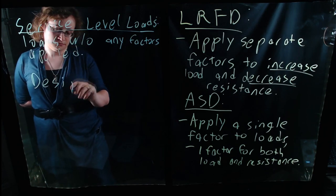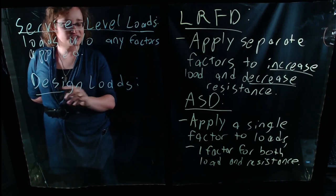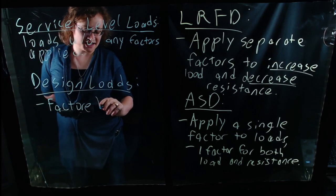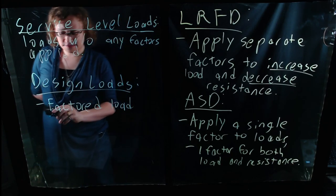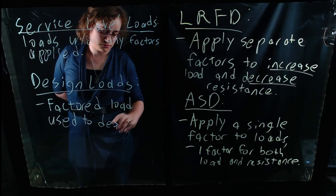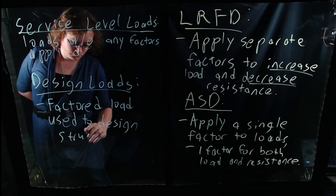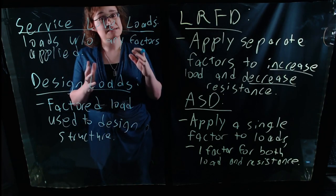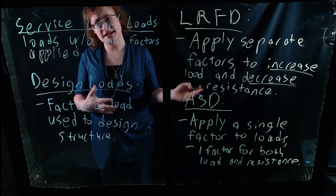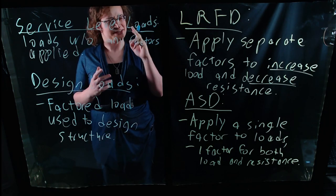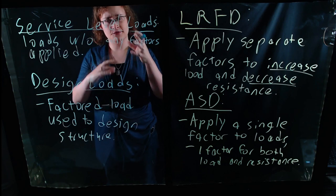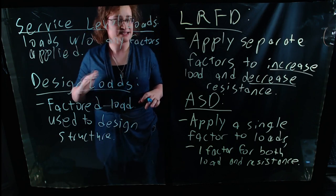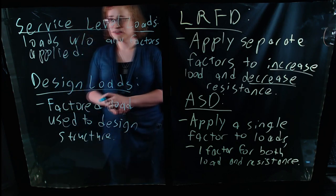Our design loads — or factored loads, terms I'll use interchangeably — are the loads that are actually going to be used to design the structure. We get our factored or design loads after first performing our best estimates on what kind of loads we'll experience, what kind of environmental events we'll experience, our best estimate of loads that our structures will experience for a given probability return period, and then applying some amount of factor of safety if you're doing ASD, or applying factored load combinations if you're doing LRFD.